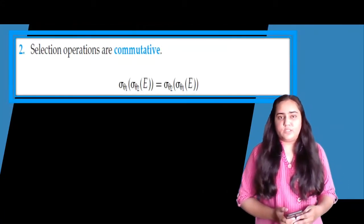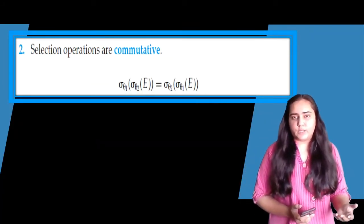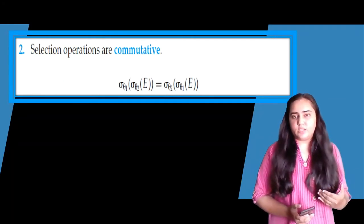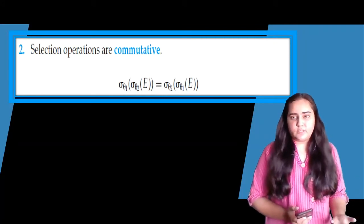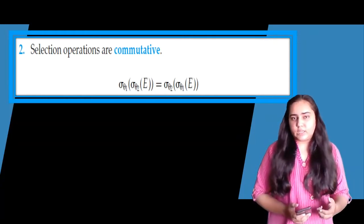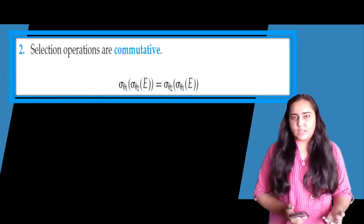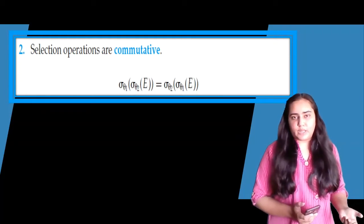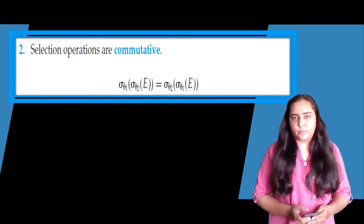The second rule says that selection operations are commutative. If I have a select operation on table E, on the left-hand side I first apply theta 2 on E and then theta 1, but on the right-hand side I apply theta 1 first and then theta 2 — it doesn't matter because these select operations are commutative.